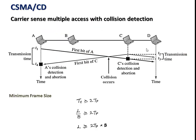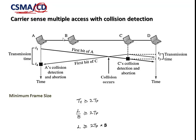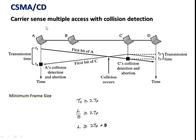CSMA/CD stands for Carrier Sense Multiple Access with Collision Detection. In basic CSMA, there is no procedure to detect a collision after the packet is transmitted. Once the last byte of a frame leaves station A, the station loses touch with the frame, so if the frame collides with another station's transmission, A has no knowledge of it. CSMA/CD addresses this problem.